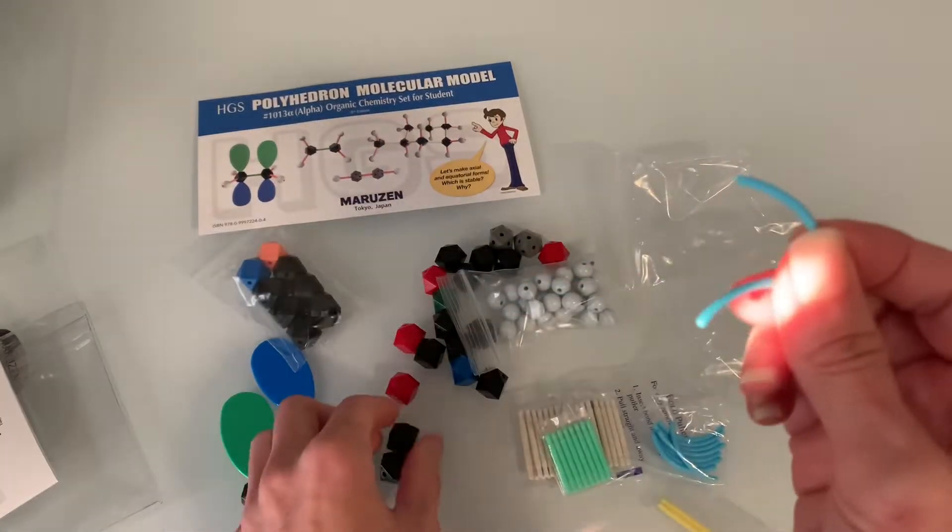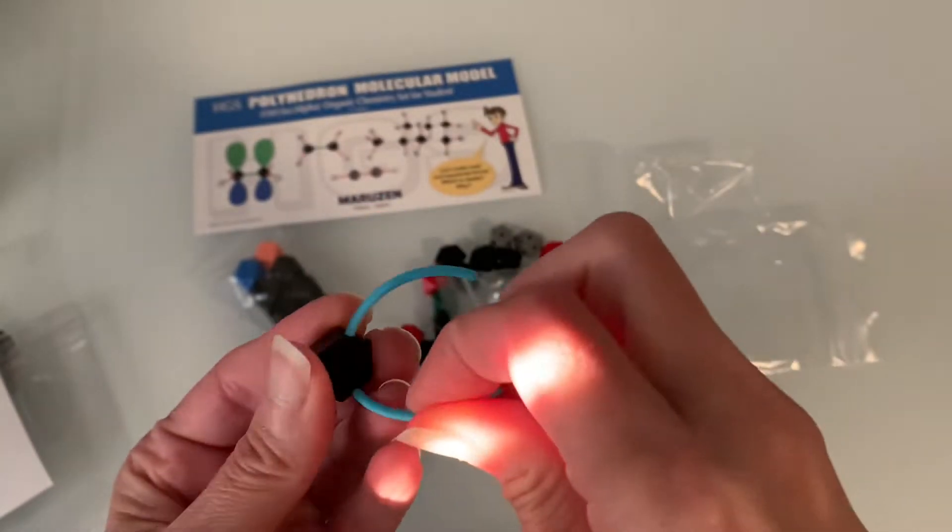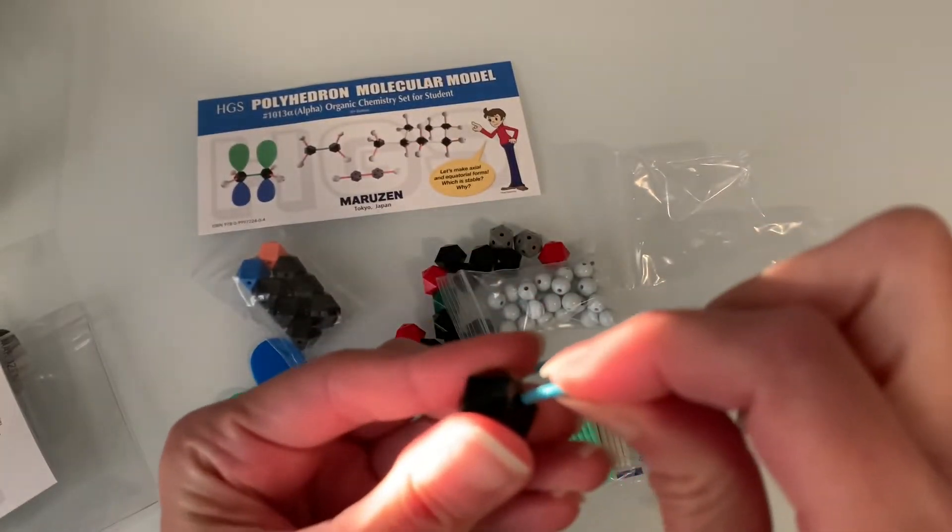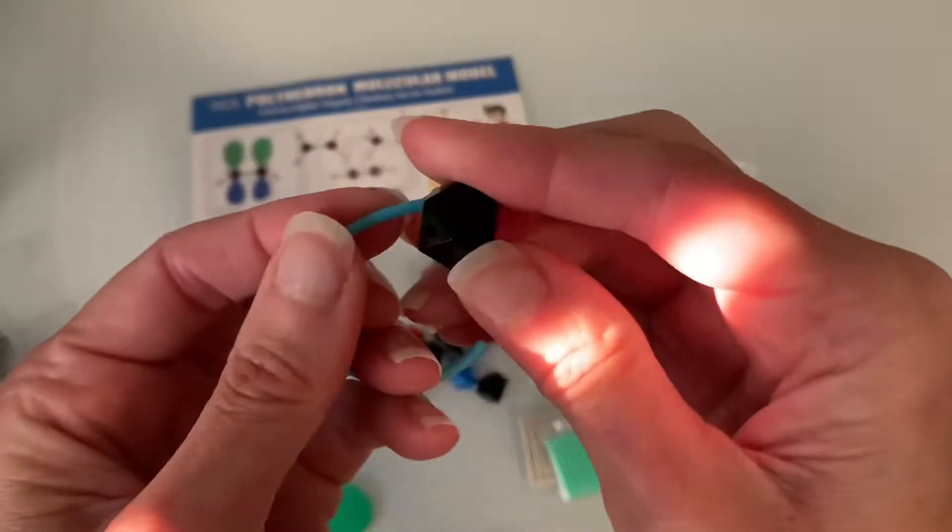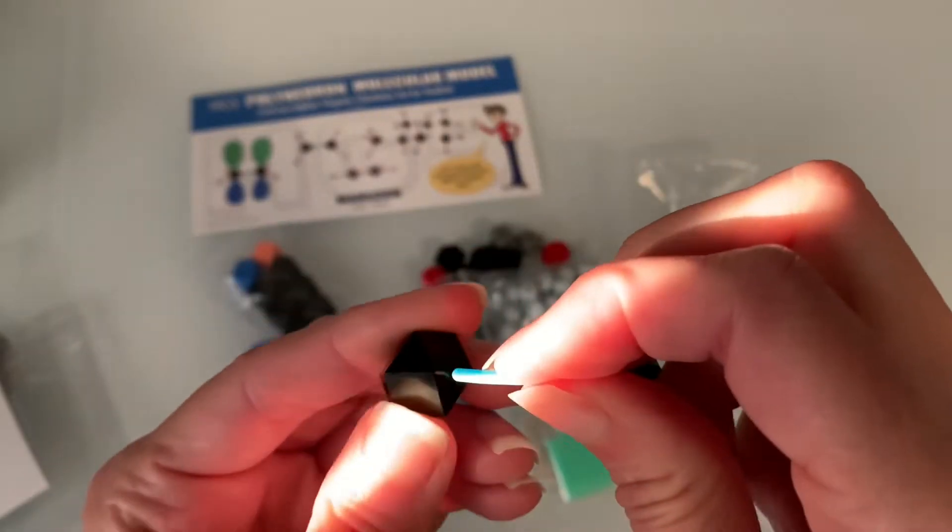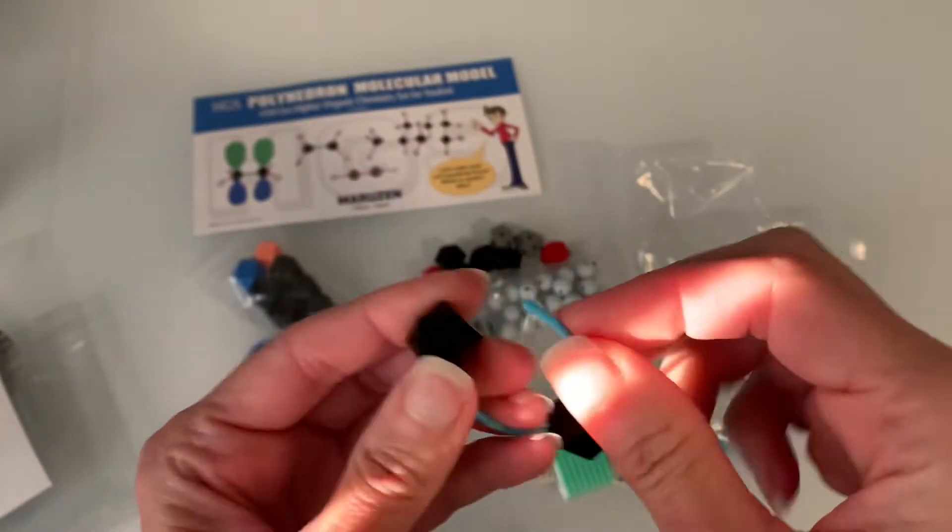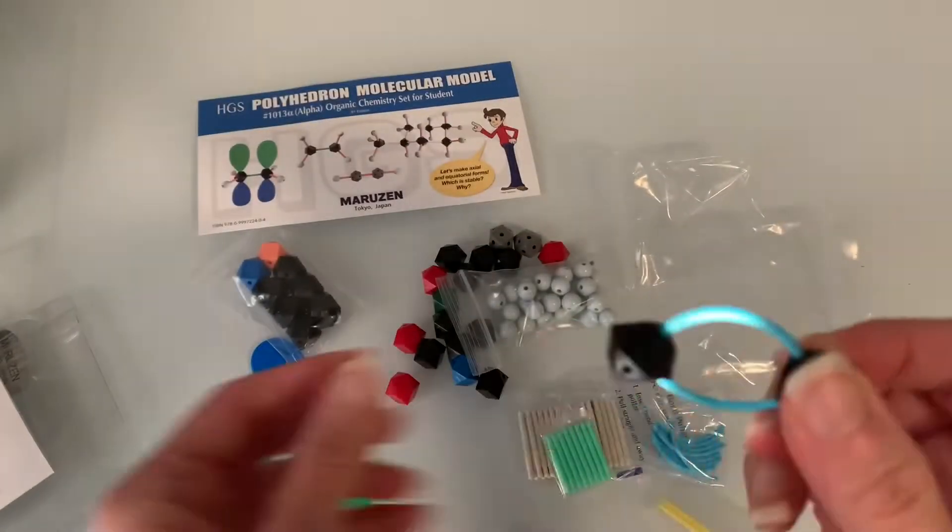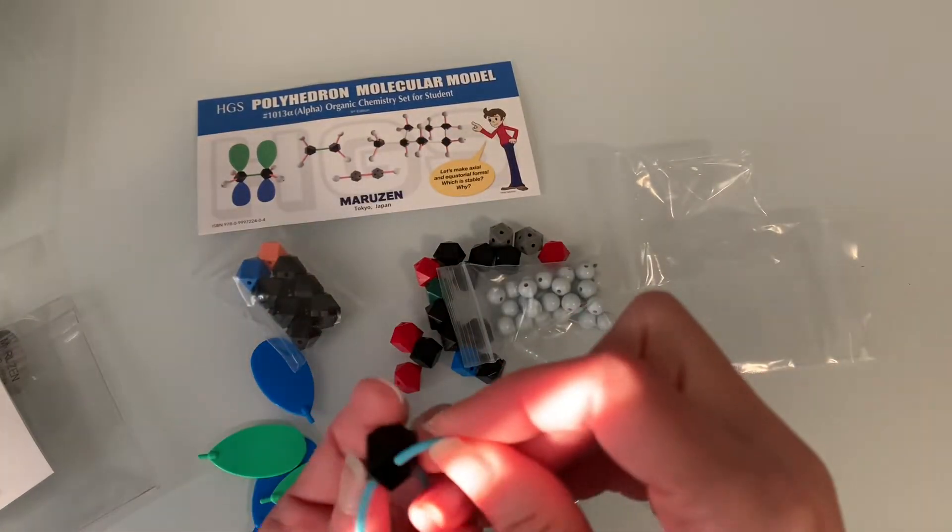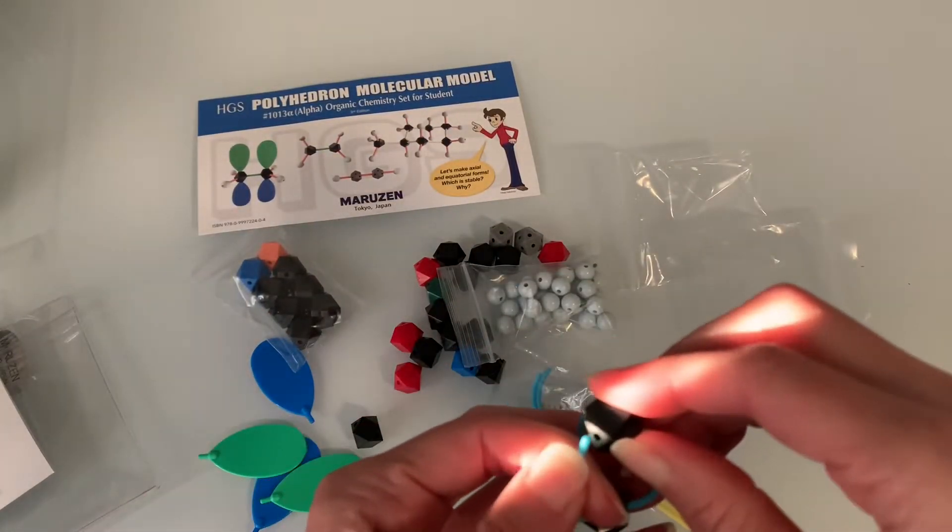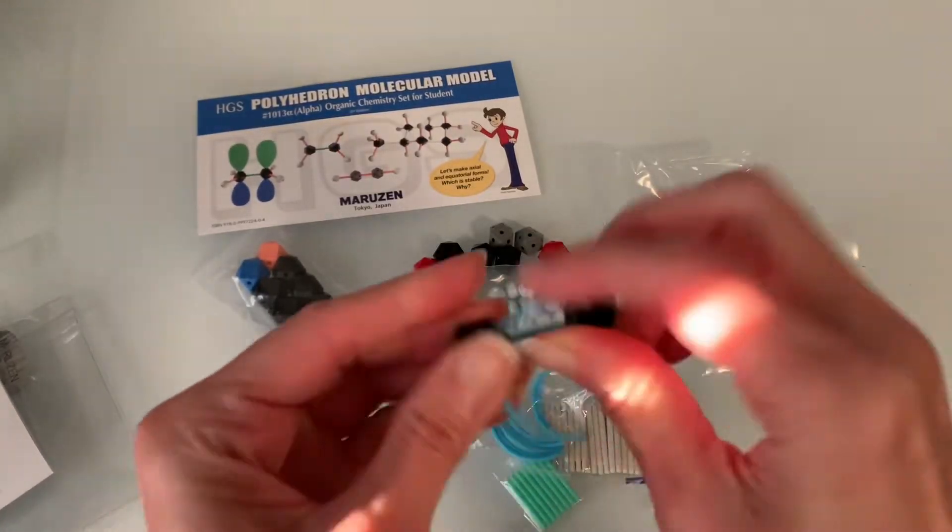For double bonds and triple bonds you get these curved shaped bonds and again they are not flexible so it's actually really difficult to fit them together to make a double bond. You can see here as I'm making this double bond it just keeps popping off of the other atom and then when I try to make a triple bond and add a third curved bond in there it's basically impossible. I gave up pretty much immediately.